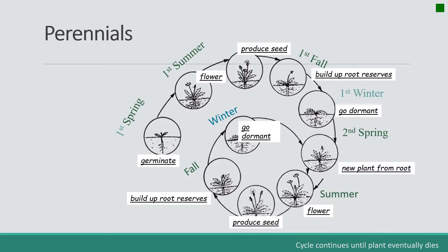Perennials will germinate, flower, produce seed, build up root reserves, and go dormant year after year after year. They will do this year after year. A lot of our bunch grasses can live for up to 12 years, so they would be completing this cycle 12 times. There are other species of plants that live for much longer — 28 to 30 years, completing 20 to 30 cycles.